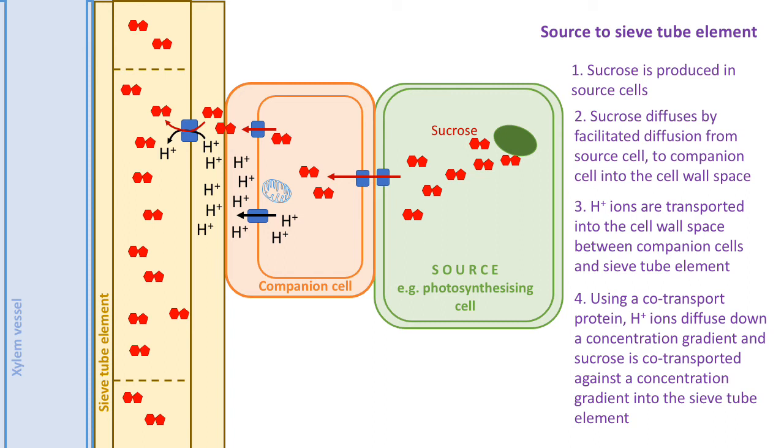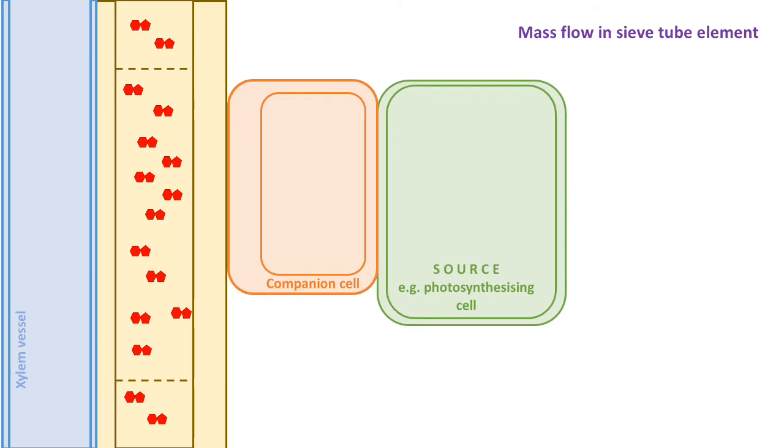Let's now look at the six steps of mass flow. Now we've got sucrose transported into the sieve tube element - we've shown how it gets from source to sieve tube element in four steps. Let's look at mass flow.